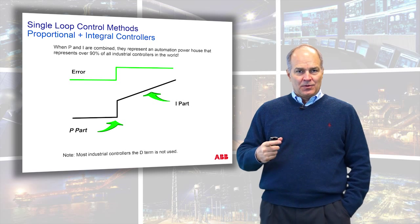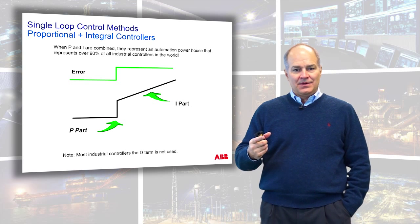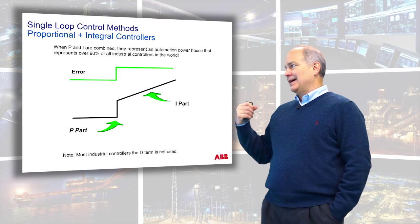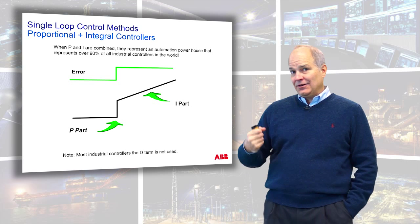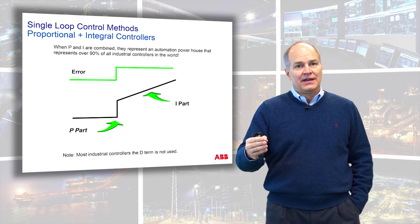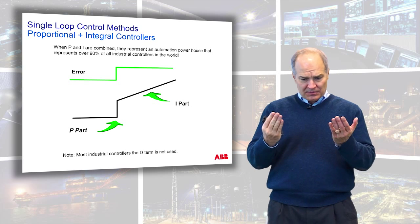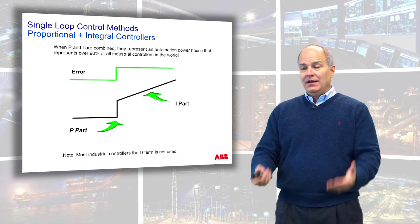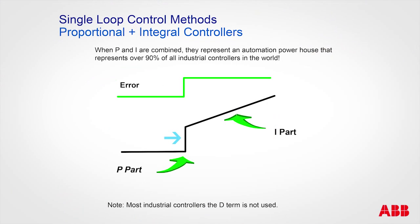Everybody likes the proportional kick you get with proportional action, but it leaves an offset. Everybody likes the fact that integral will force the error to zero, but it's too slow to act. So what if we put them together - P plus I? You get both the proportional kick and the integral kick.